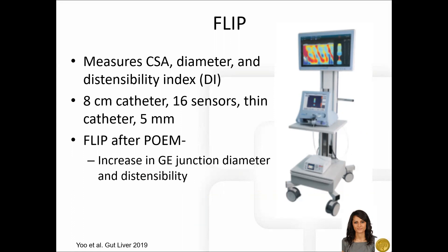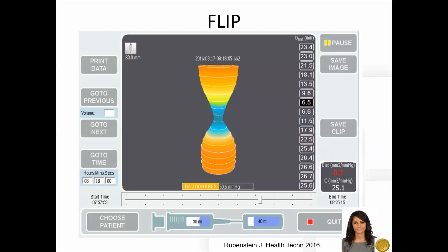In previous studies, FLIP technology has been employed to demonstrate an increase in the esophagogastric junction diameter and distensibility after a POEM procedure for achalasia. The image presented here demonstrates an example of the topographical image demonstrated by FLIP technology. The bottom portion of the image shows the amount of fluid injected into the balloon. The numbers along the right bar show the range of diameters measured via the balloon, with the highlighted number demonstrating the diameter at the narrowest point of the balloon.